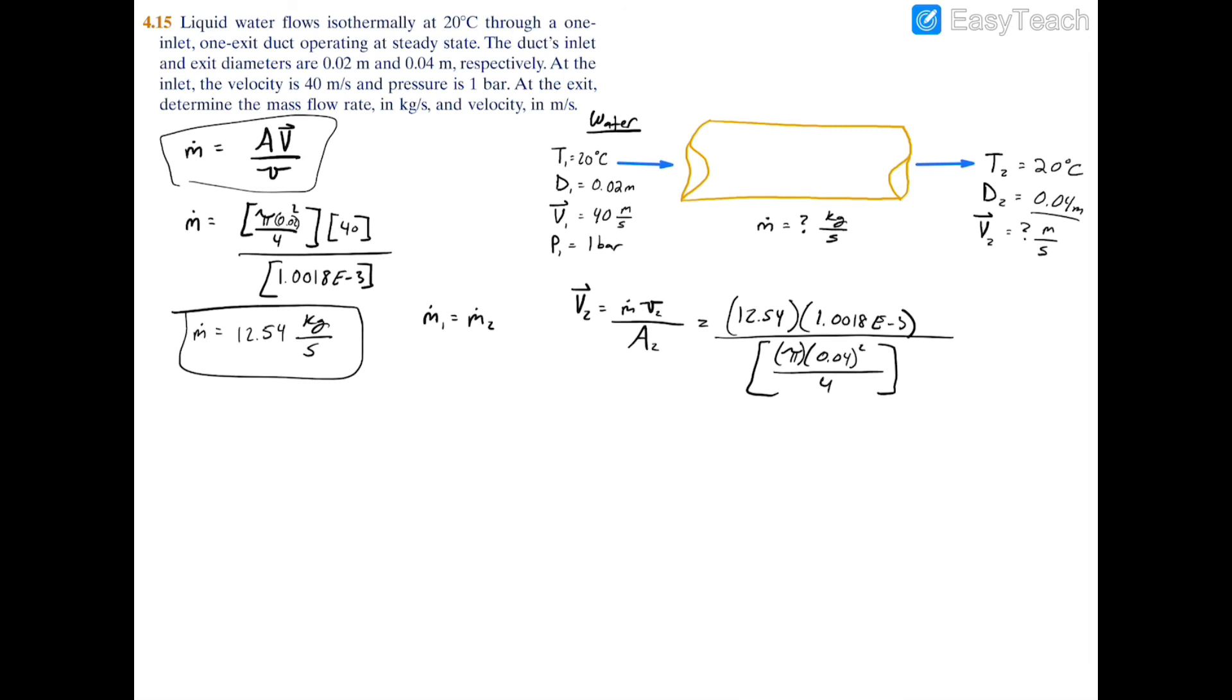Now if you plug this expression into your calculator, you'll find that the velocity at 2 is equal to just about 10 meters per second.